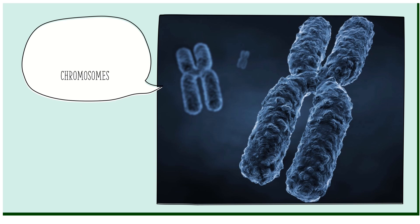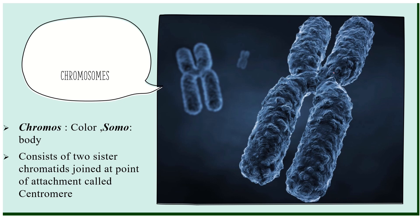Now, why are chromosomes named so? 'Chromos' means color and 'soma' means body — when they stained the cell, these structures appeared as colored bodies, hence the name chromosomes. A chromosome has two chromatids joined by a middle structure called the centromere, which is the most important part of the chromosome. The centromere is the point of attachment of the chromatids in a chromosome.